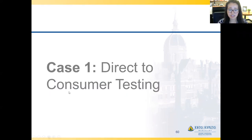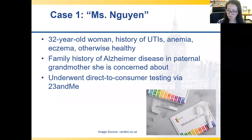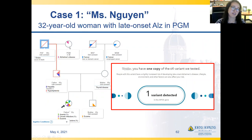Case one: direct-to-consumer testing. Ms. Yuen is a 32-year-old woman who is overall healthy but worried about her family history of Alzheimer's disease. She saw a deal on 23andMe, submitted a sample, and got a result back saying she has one copy of the APOE E4 variant. 23andMe actually does a good job of providing information to the patient — most patients haven't had particular concern and were able to access genetic counselors through the company. Theoretically, if someone was concerned, APOE4 is a risk allele — it would be a risk gene, not a directly disease-causing Mendelian variant.